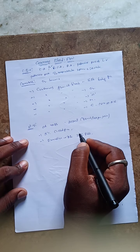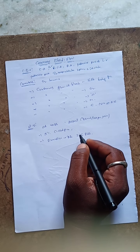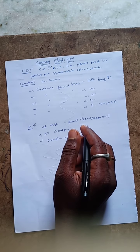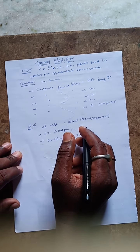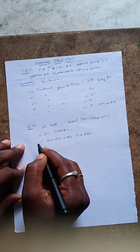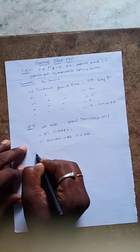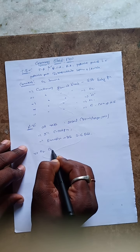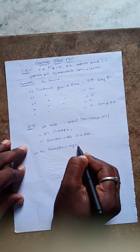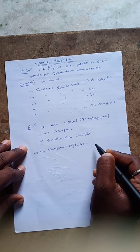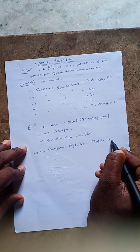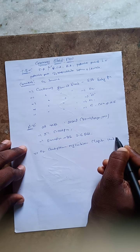Blood flow into the left ventricle is twice that of the right ventricle. Another key character of coronary blood flow is oxygen consumption by the myocardium. The myocardium is the middle layer of the heart, which is made up of three layers.